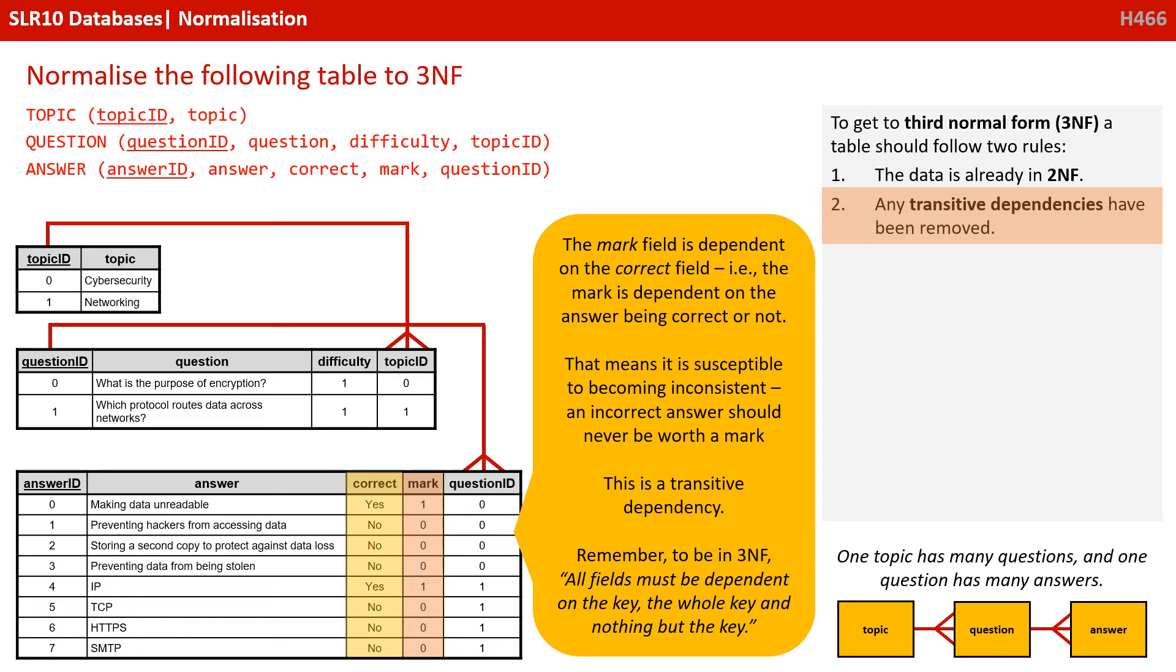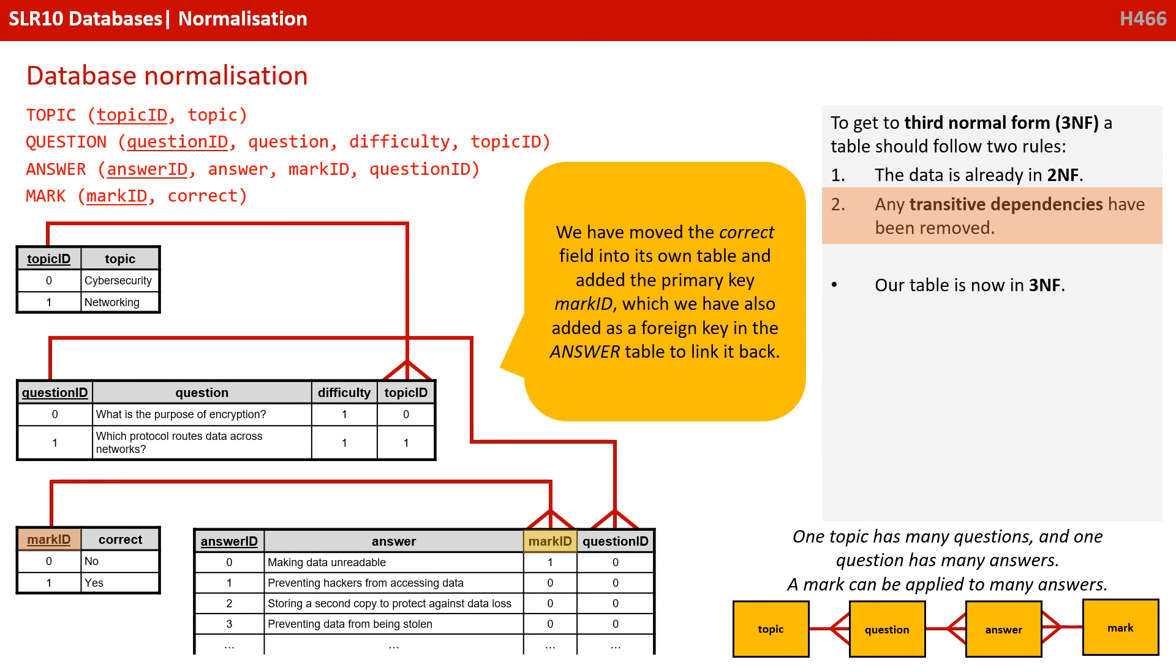Remember, to be in third normal form, all fields must be dependent on the key, the whole key and nothing but the key. Well, the key in this table is answer ID, but mark is dependent on the correct field. So we've moved the correct field into its own table and added the primary key mark ID, which we've also added as a foreign key in the answer table to link it back. Our table is now in third normal form.